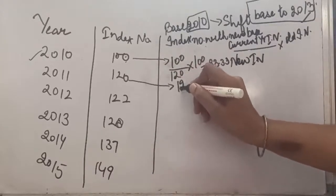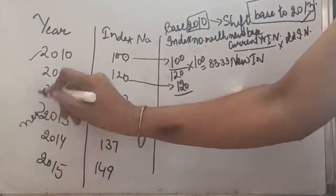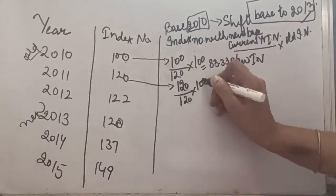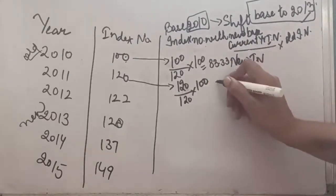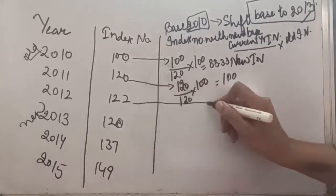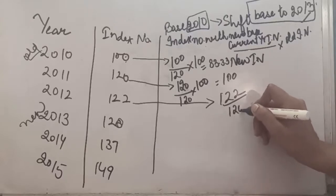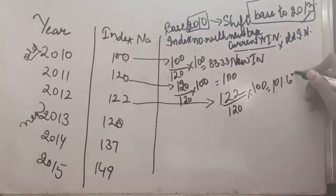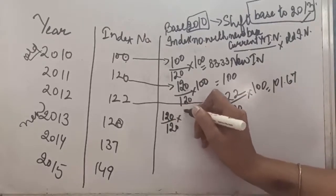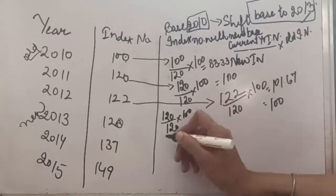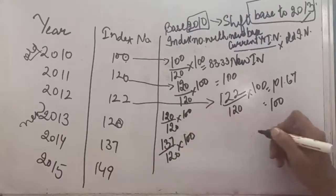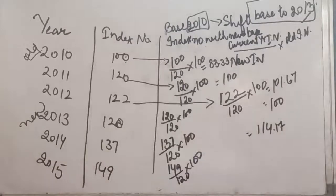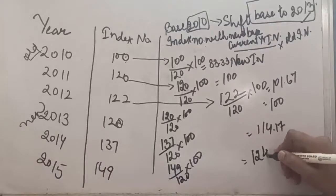The new index number (120) and old index number (100) remain fixed; only the current year index number changes for each year. For 2013: 120 divided by 120 into 100 gives 100. For 2014: 122 divided by 120 into 100 gives 101.67. For 2015: 137 divided by 120 into 100 gives 114.17. The last value is 149 divided by 120 multiplied by 100, giving 124.17.